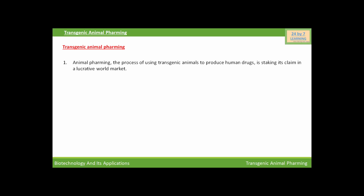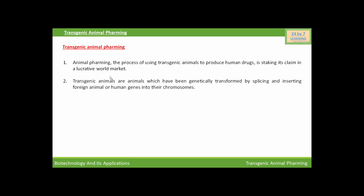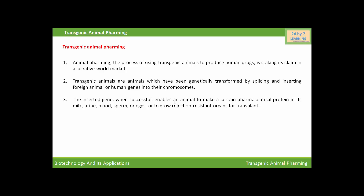Animal farming — the process of using transgenic animals to produce human drugs — is staking its claim in a lucrative world market. Transgenic animals are animals which have been genetically transformed by splicing and inserting foreign genes or human genes into their chromosomes. The inserted gene, when successful, enables the animal to make a certain pharmaceutical protein in its milk, urine, blood, sperm or eggs, or to grow rejection-resistant organs for transplant.